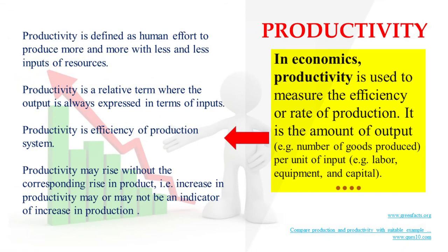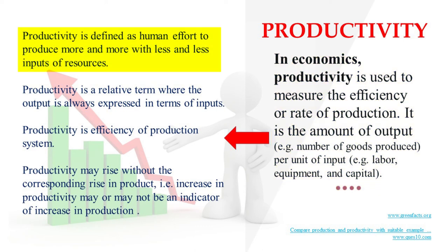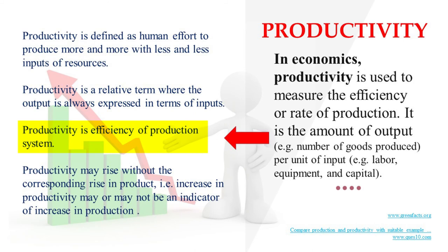Productivity in economics is used to measure the efficiency or rate of production. It is the amount of output — that is, the number of goods produced per unit of input, such as labor, equipment, and capital. Productivity is defined as human effort to produce more and more with less and less input of resources. Productivity is a relative term where the output is always expressed in terms of input. Productivity is the efficiency of production systems. Productivity may rise without a corresponding rise in production.